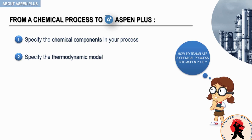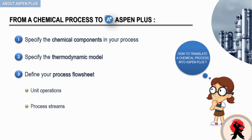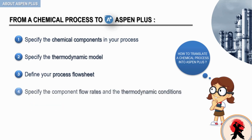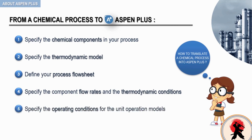Next, you need to define your process flow sheet. This step includes defining the unit operations in your process, the process streams that flow into and out of these unit operations, and selecting models from the ASPEN PLUS model palette to describe each unit operation. After that, you need to connect your unit operation models via process streams. Next, you will need to specify the component flow rates and the thermodynamic conditions — such as temperature, pressure, and mass or molar composition — for all of your feed streams.